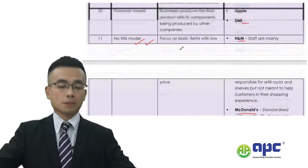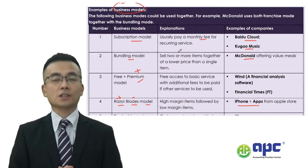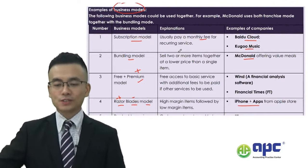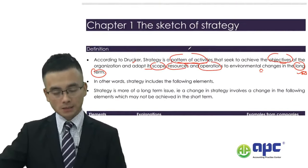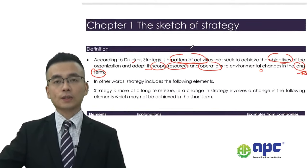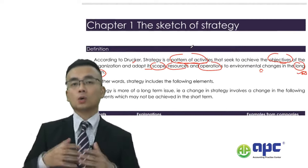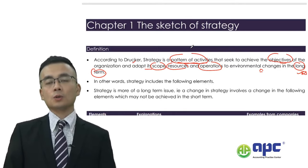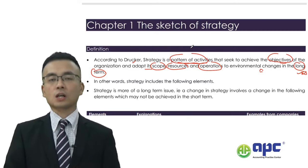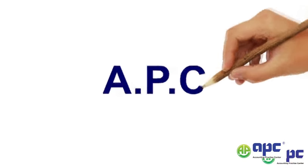These are business models commonly used by real businesses in real life. The sketch of strategy gives you a very solid understanding of what strategy means. When answering exam questions using these different business models or other models seen later in the course, it will be more sensible to give your recommendation or conclusion to the examiner by demonstrating strong commercial acumen and professional skill. This ends chapter one. I'll be looking forward to seeing you in the next video. APC — accounting for your future.